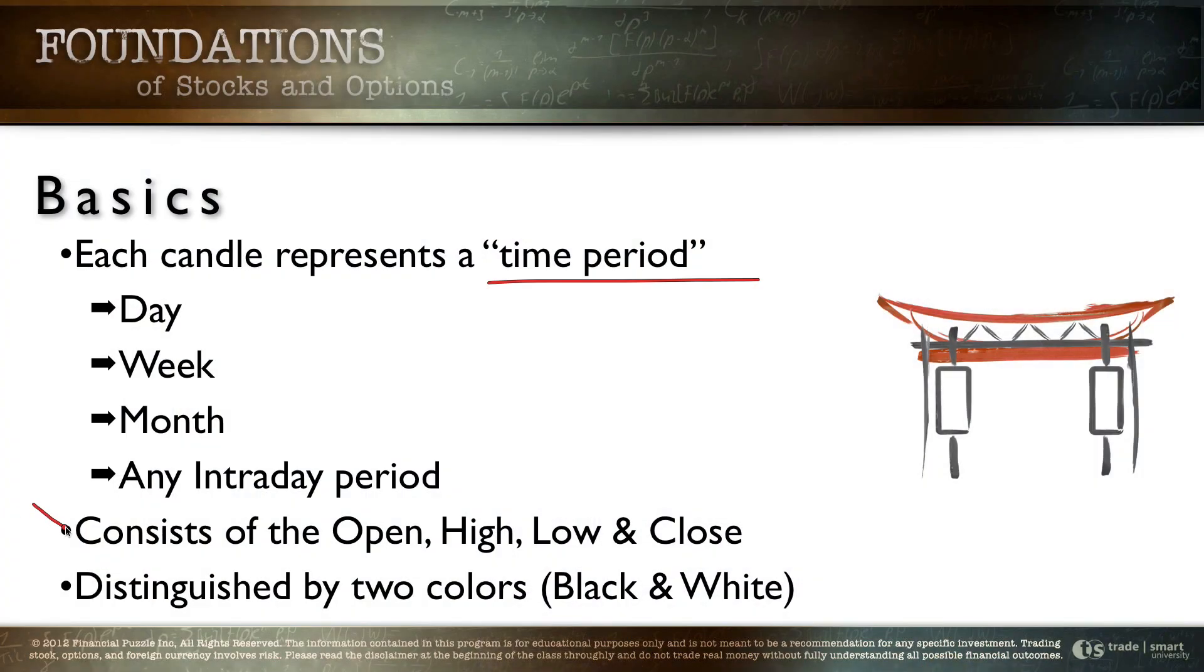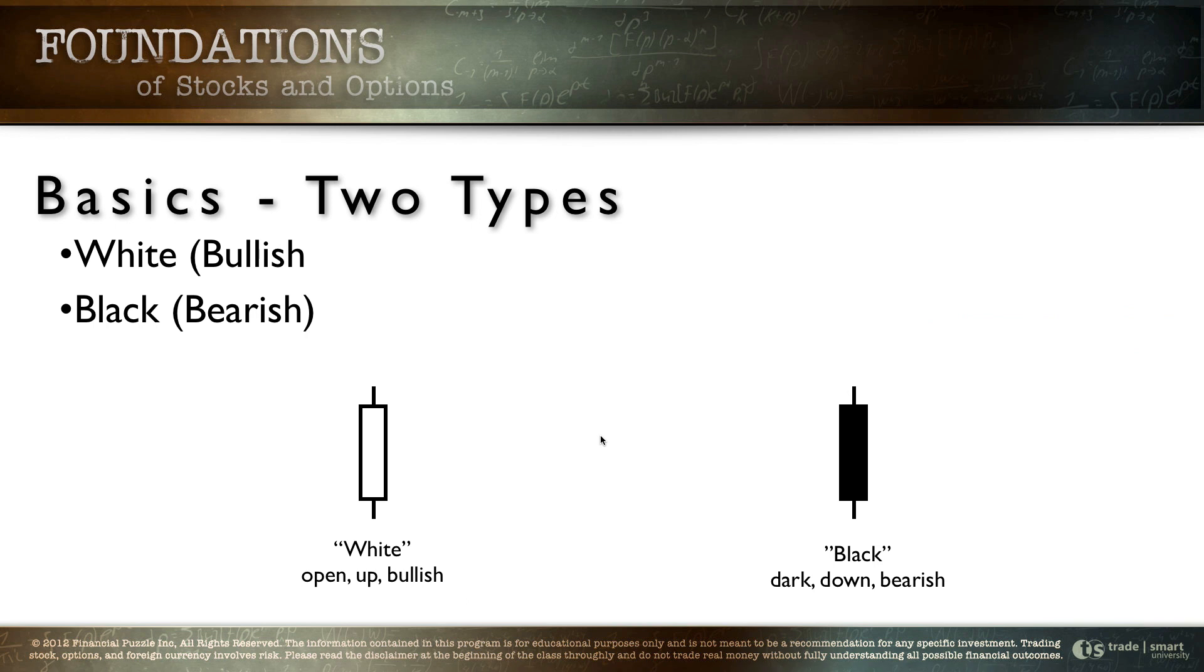The candlestick is going to consist of the open, the high, the low and the closing price and we're going to have them distinguished by two colors and those colors are black and white. Now as we look at the two basic candlesticks you can see these here on the screen we've got a white candle and we've got a black candle. Generally speaking the white candle is considered bullish and the black candle is considered bearish. Now I say it that way because the opening price and the closing price dictates the color but as you're going to see in a minute sometimes we can actually have a bullish day for the market and a black candlestick and I'll show you that distinction here in just a minute.